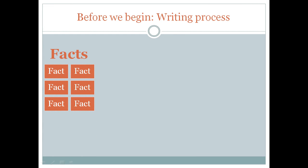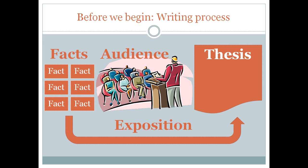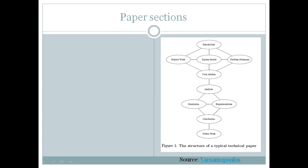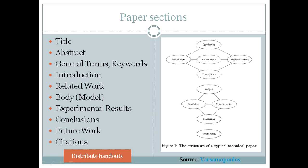How does the writing process work? We gather facts, identify an audience, determine the thesis — the point of the paper — and then begin the writing process. Not all of the facts will be used; only certain ones that support the points we're trying to make. Please look at your handout, the Varsimopoulos paper. The main sections are: title, abstract, general terms and keywords, introduction, related work, body or model or methodology, experimental results, conclusions, future work, and citations. There are appendices and other sections, but this should be enough for this 15-minute presentation.